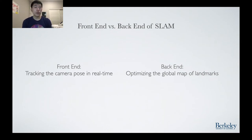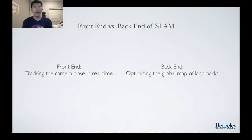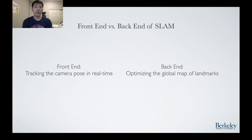In general, SLAM is broken into two parts: the front-end, involved with tracking the pose of the camera in real-time, and the back-end, optimizing the global map of landmarks. In code terms, these are two separate threads running side-by-side. Modern-day SLAM algorithms pick and choose a front-end and a back-end in order to achieve the desired results of speed and accuracy.